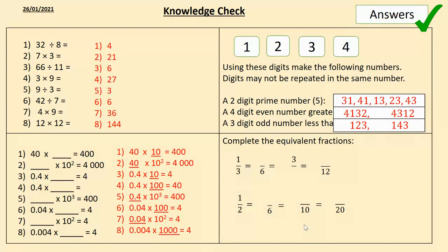And last of all, equivalent fractions. You should have noticed a pattern there. Be careful you didn't get caught out on the bottom row, because they were not doubling each time. There wasn't a pattern — they were just all equivalent to one half. But you can see that one is half of two, three is half of six, five is half of ten, and ten is half of twenty.